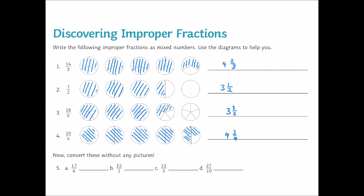Welcome back. Hopefully you've worked through these. And you should have found that the solutions to the first four were four and two thirds, three and a half, three and three fifths, and four and three quarters. The solutions to question five were two and five sixths, seven and a half, three and two thirds, and two and seven tenths.